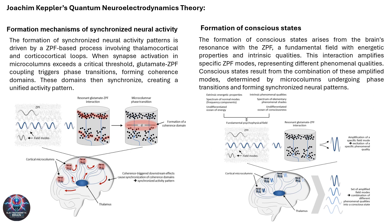Electromagnetic consciousness suggests that conscious experiences emerge from synchronized neural activity driven by electromagnetic interactions. This illustrates how the formation of synchronized neural patterns is linked to the brain's interaction with the ZPF. When synaptic activation in micro-columns exceeds a critical threshold, glutamate-ZPF coupling initiates phase transitions, leading to the creation of coherence domains. These coherence domains synchronize to form a unified electromagnetic field across different brain regions. This synchronization is believed to facilitate integrated conscious experiences, highlighting how electromagnetic fields generated by neural activity can give rise to a coherent field of consciousness that encompasses the entire brain's functional states.